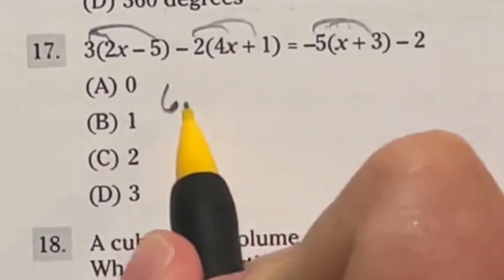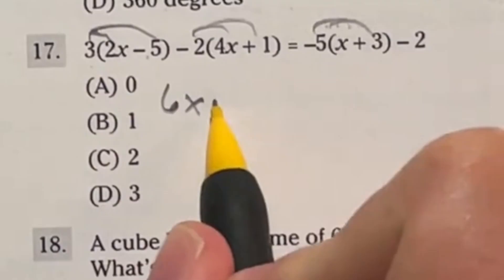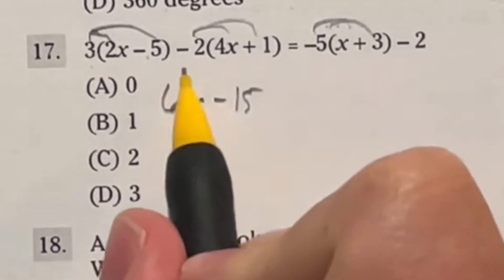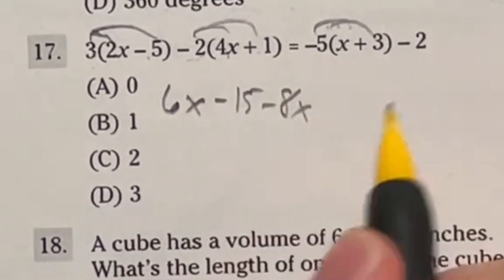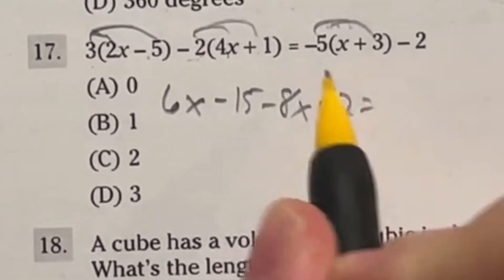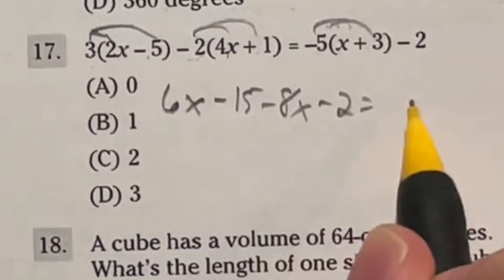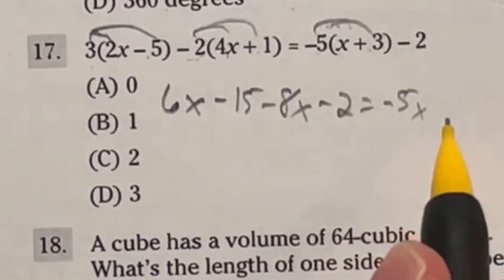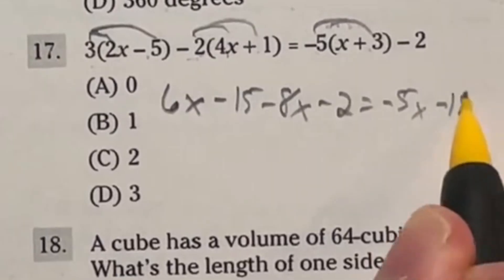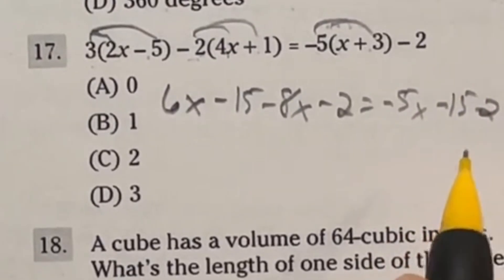So starting off, 3 times 2x is going to give me 6x. 3 times negative 5 is going to give me negative 15. We got this negative 2 times 4x is going to give me negative 8x. And I got negative 2 times 1, which is going to give me negative 2. On this side, negative 5 times x is going to give me negative 5x. And negative 5 times 3 is going to give me negative 15. And we still got that negative 2 squeezing on the end there.